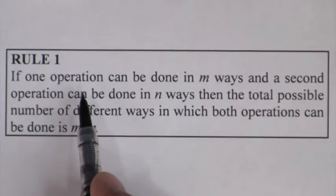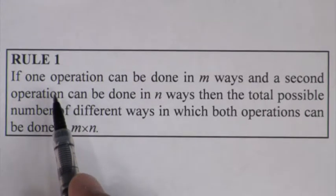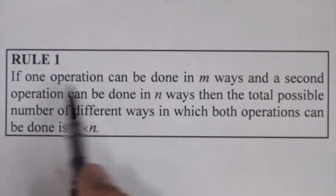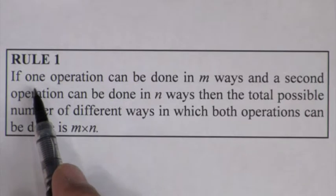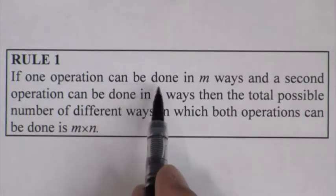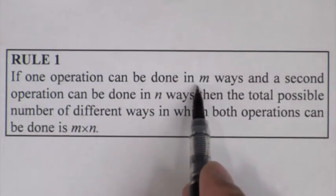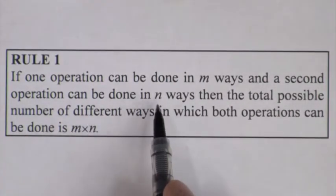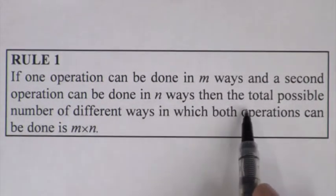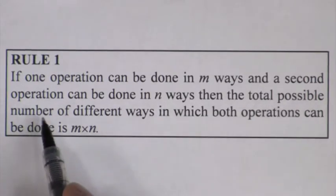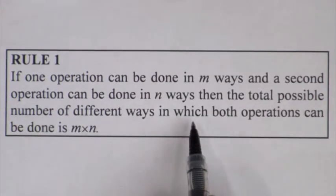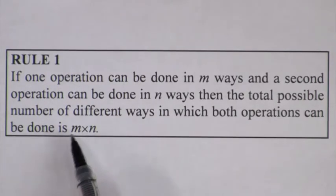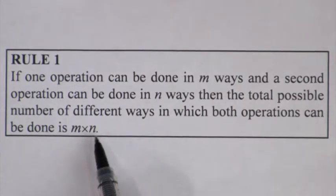This rule for the Fundamental Counting Principle reads as follows: If one operation can be done in M ways and a second operation can be done in N ways, then the total possible number of different ways in which both operations can be done is M multiplied by N.